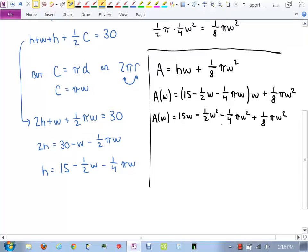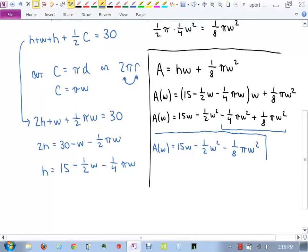You can collect some like terms together here, right? These two? What would that turn out to be? What's one fourth pi w squared plus one eighth pi w squared? Negative one eighth, okay? So A of w equals 15w minus one half w squared minus one eighth pi w squared. And I'm pretty happy with that as being my final function that I'm going to do calculus on.